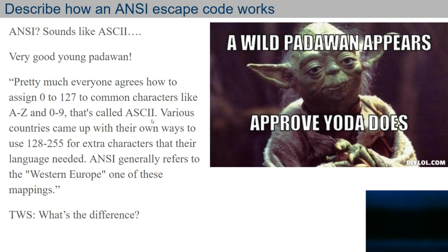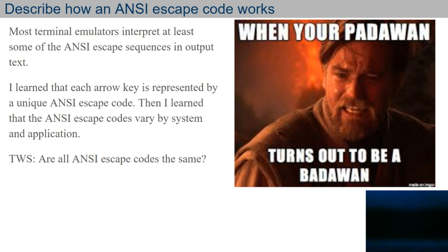Earlier when I said it's an extension of ASCII — basically we have 0 to 127 in terms of all these letters, numbers, and symbols on the keyboard that we can type and have show up on a computer. ANSI assigned additional numbers, 128 to 255, to add all kinds of extra characters. Think of Western Europe — like the Spain side of Europe. Here in America, most terminal emulators interpret at least some of the ANSI escape characters. I also learned that the arrow keys are in that ANSI realm, and you can type in these escape characters in a program to utilize the arrow keys.